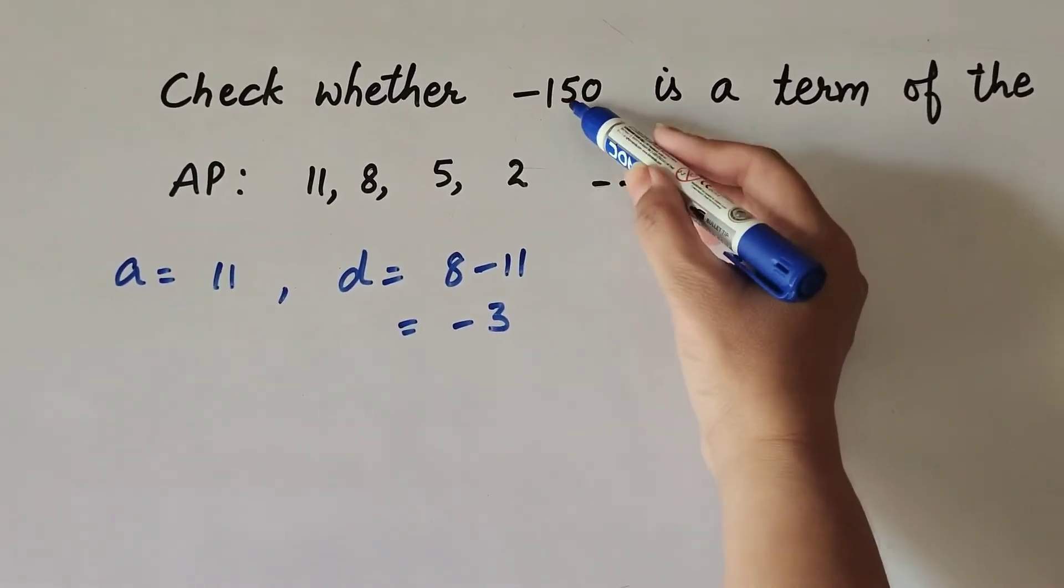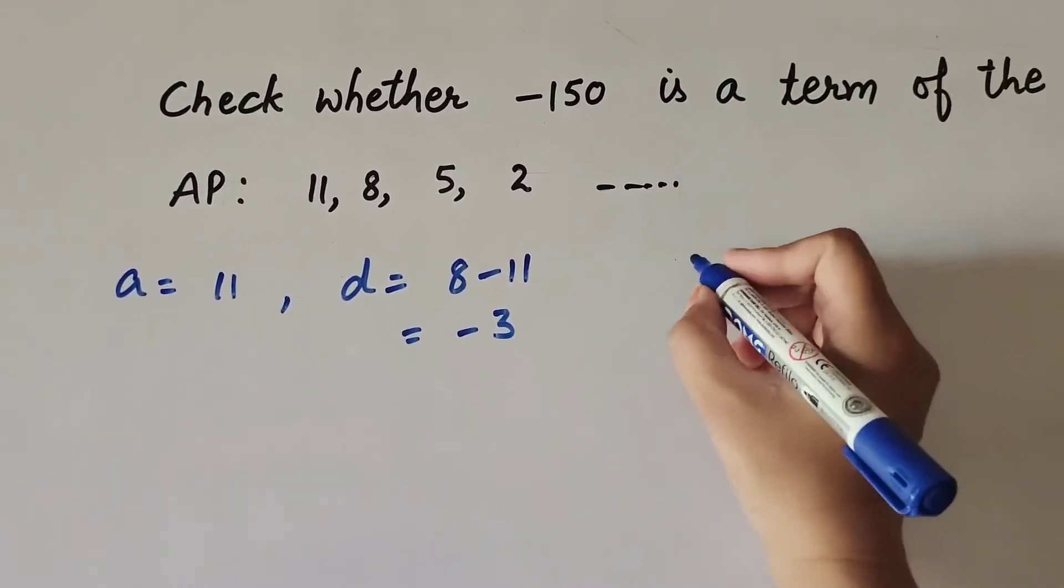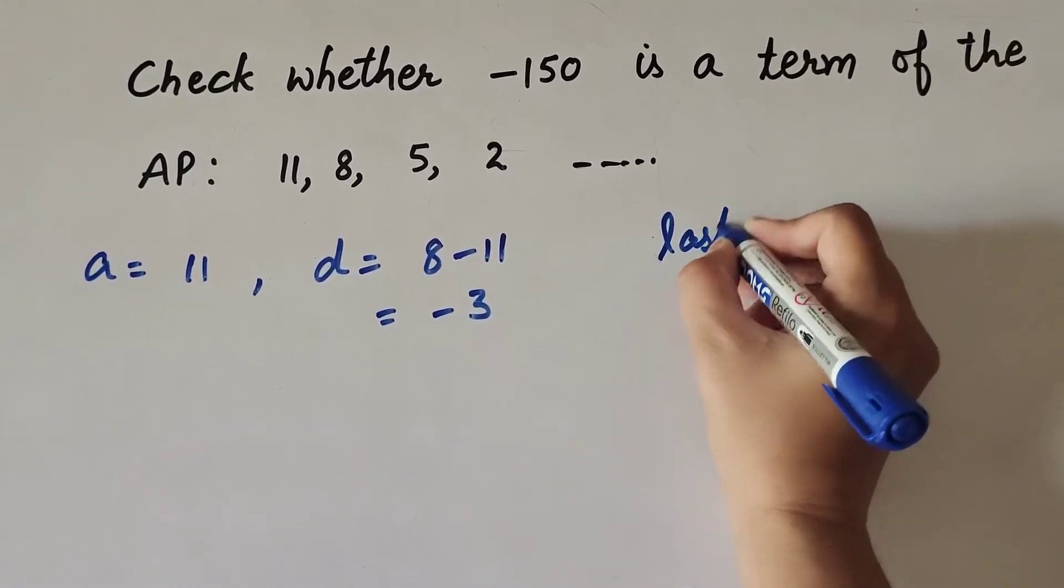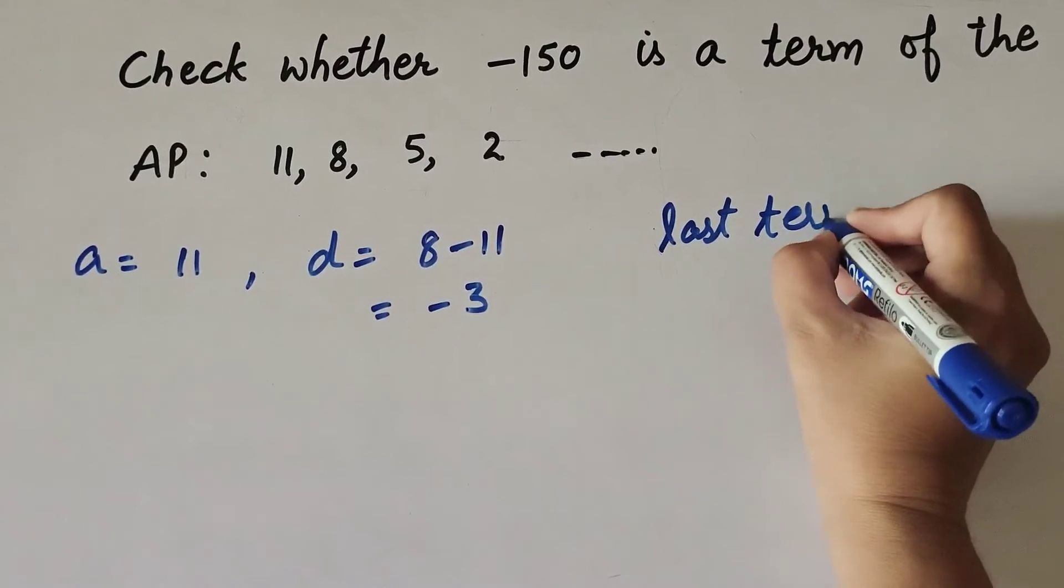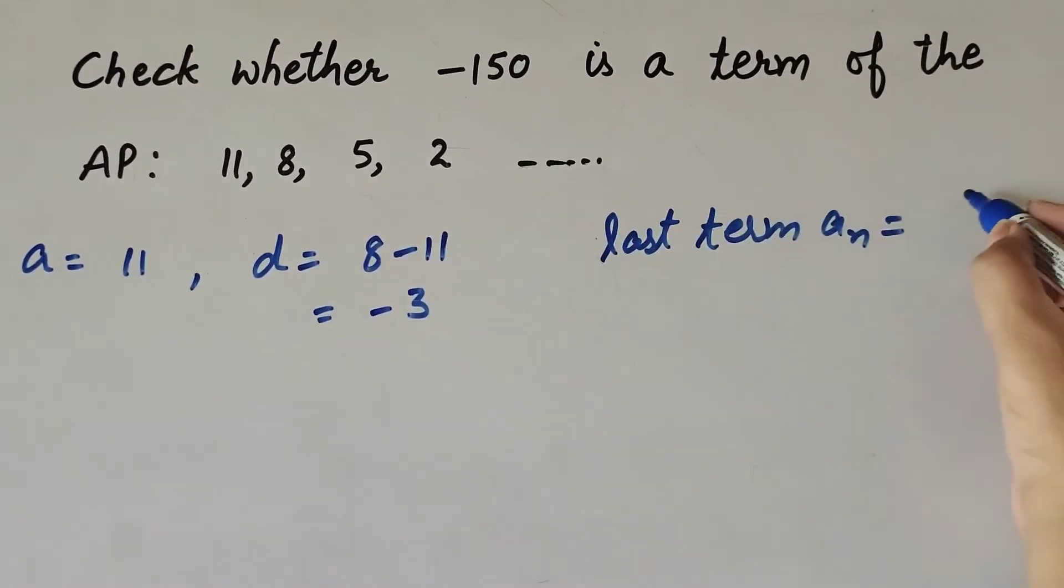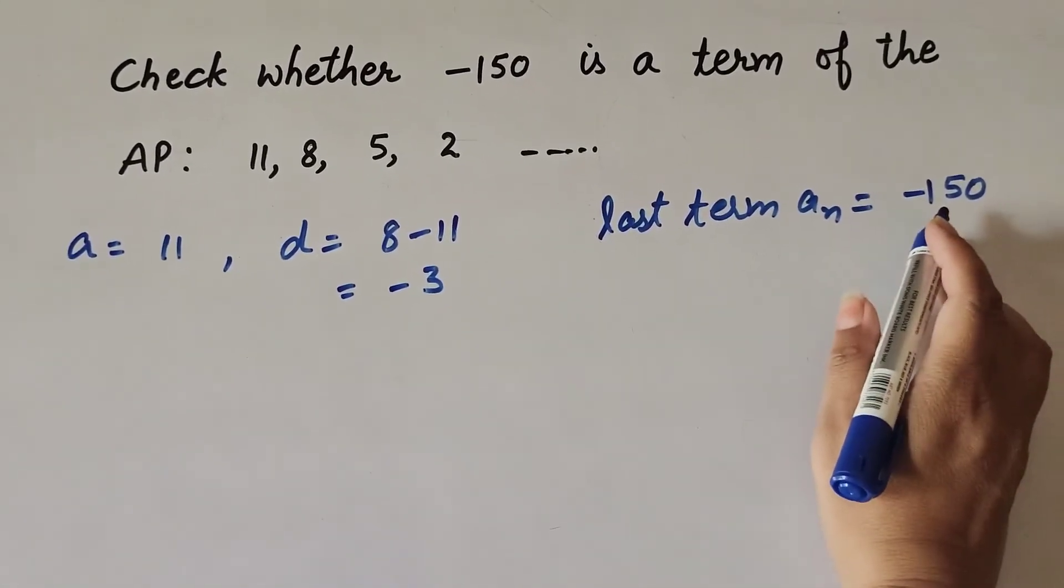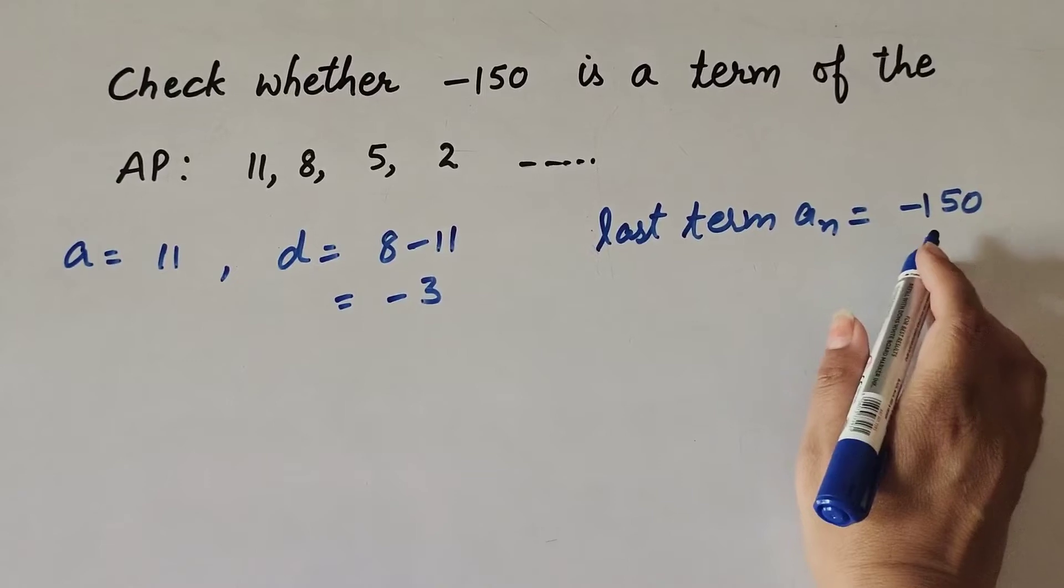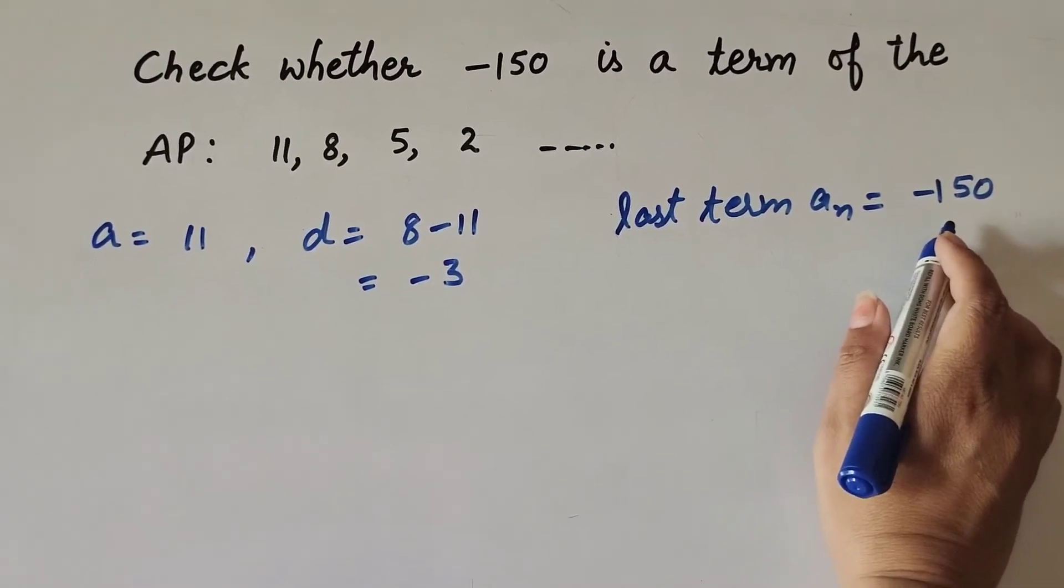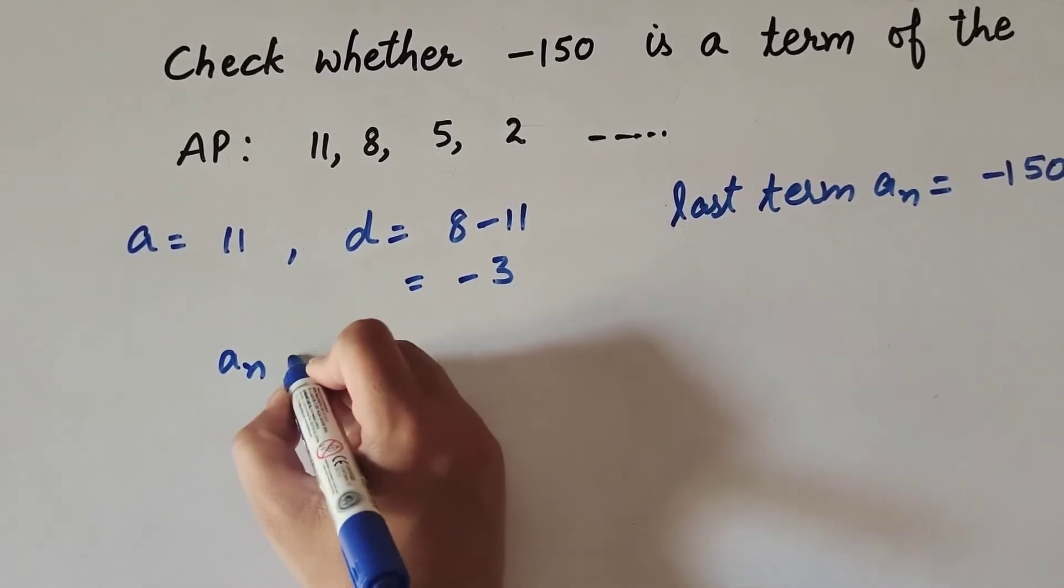The last term of the AP is -150. We suppose this is the last term of the AP, so last term an equals -150. We know the formula to find the nth term of an AP.